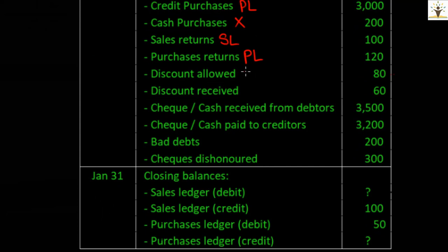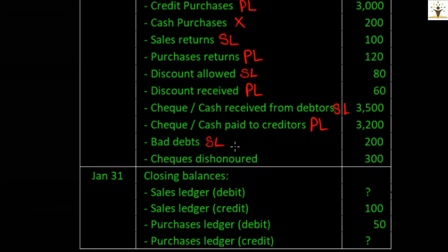Discounts are always allowed to debtors, so will be recorded in the sales ledger control account. Discounts are always received from creditors, hence recorded in the purchase ledger control account. Checks or cash collected from debtors will appear in the sales ledger control account, and checks or cash paid to creditors will appear in the purchase ledger control account. Bad debts are amounts not received from debtors, so the balance due must be written off from the debtor accounts in the sales ledger, hence recorded in the sales ledger control account.